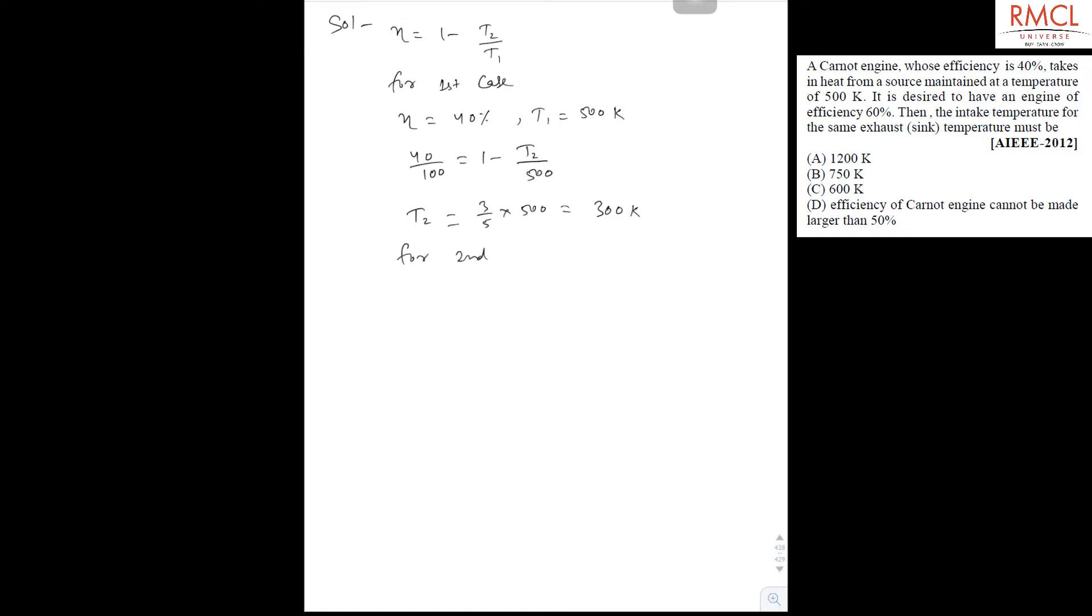And for the second case, efficiency is 60% and T2 is 300 Kelvin. So 60 upon 100 equals 1 minus 300 upon T1, which gives T1 equals 5 by 2 into 300.